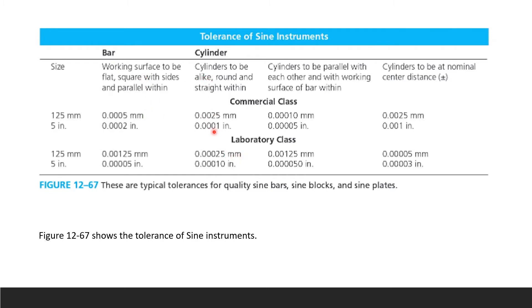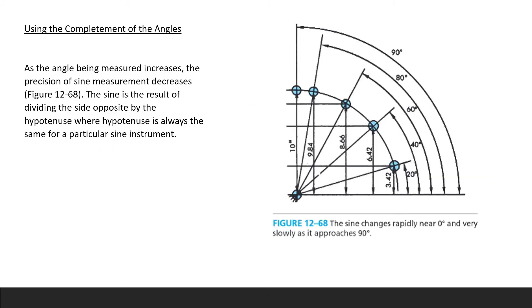The sine bar has evolved from simpler designs that are still used because they are low cost and convenient. A sine plate is a sine block with an attached base. The table shows typical tolerances for quality sine bars, sine blocks, and sine plates, indicating bar and cylinder sizes for commercial and lab classes. As the angle being measured increases toward 90 degrees, the precision of the sine measurement decreases.